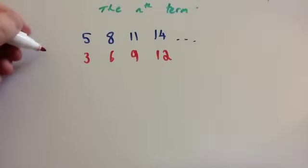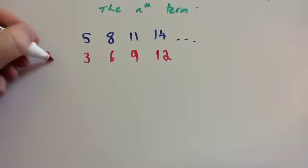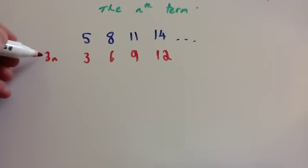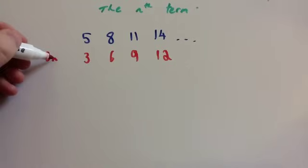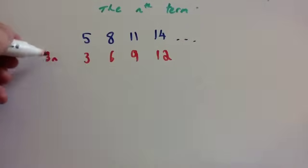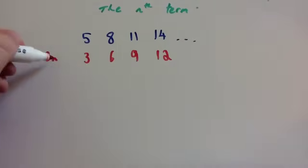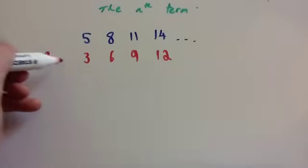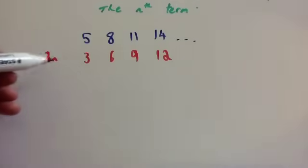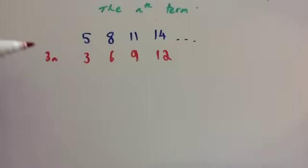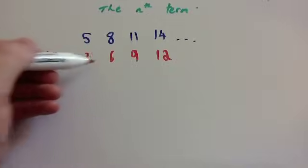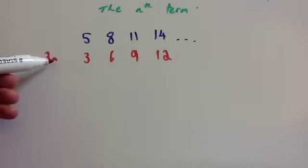The 3 times tables is 3n — in other words, 3 times the number. So 3 times 1 is 3, 3 times 2 is 6, 3 times 3 is 9. So if your sequence was getting bigger by 3 each time you'd write 3n. If it was getting bigger by 7 each time, you'd write 7n, and so on.